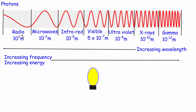Each of these regions — so radio waves, microwaves, infrared and so on — all have a characteristic wavelength associated with them. The wavelength of a wave is simply the distance in metres from the peak to the next peak of the wave, or alternatively from the trough to the next trough of the wave.